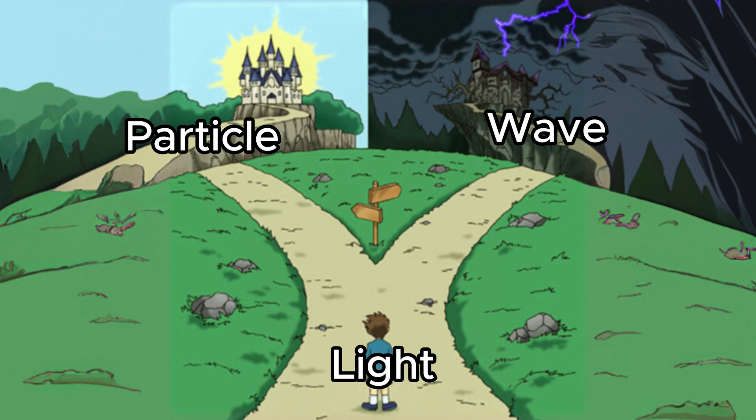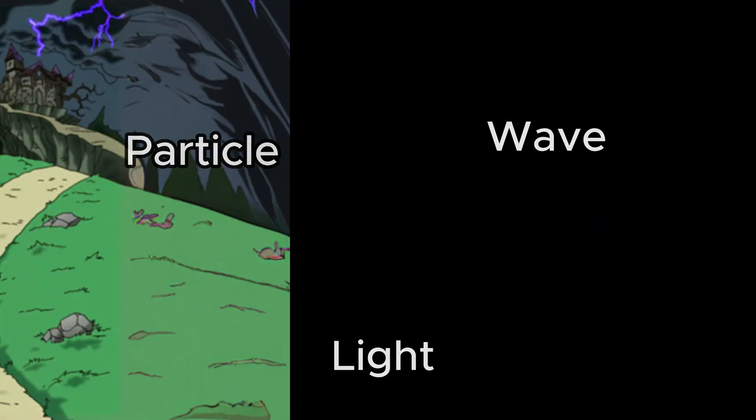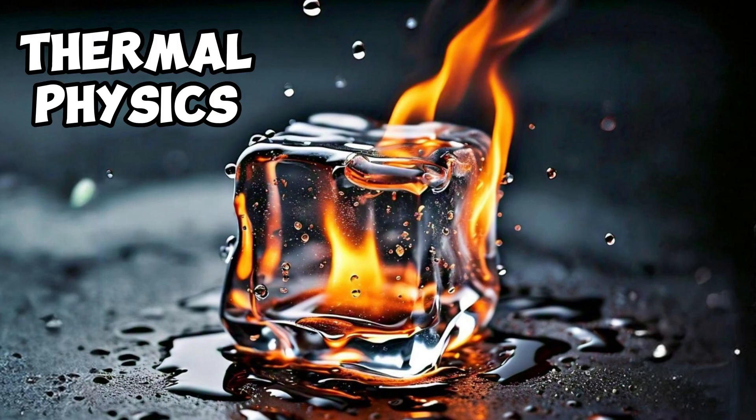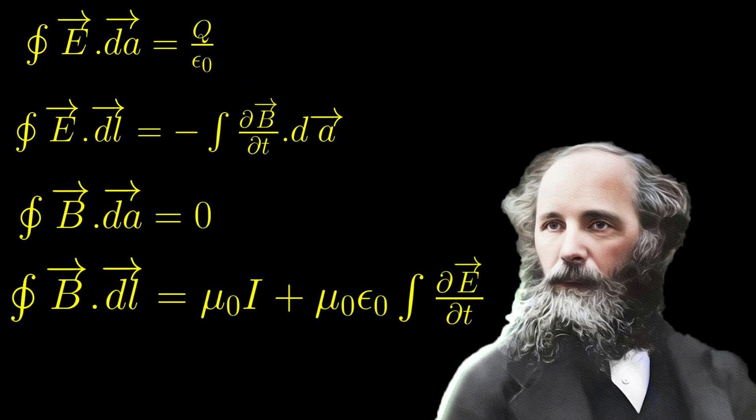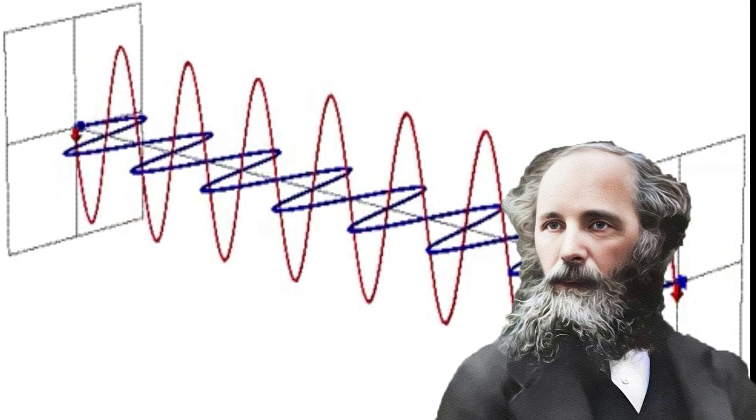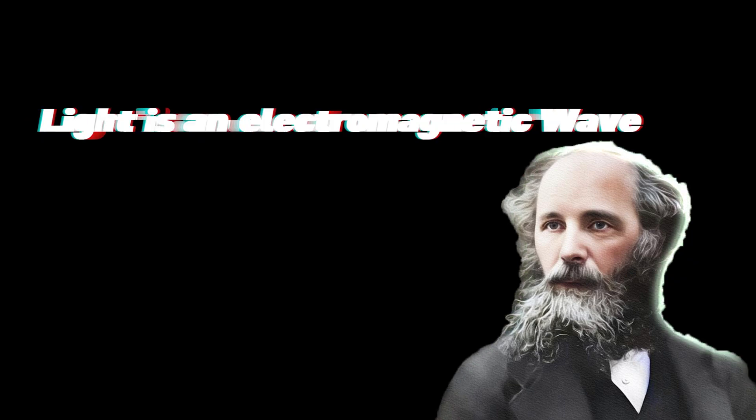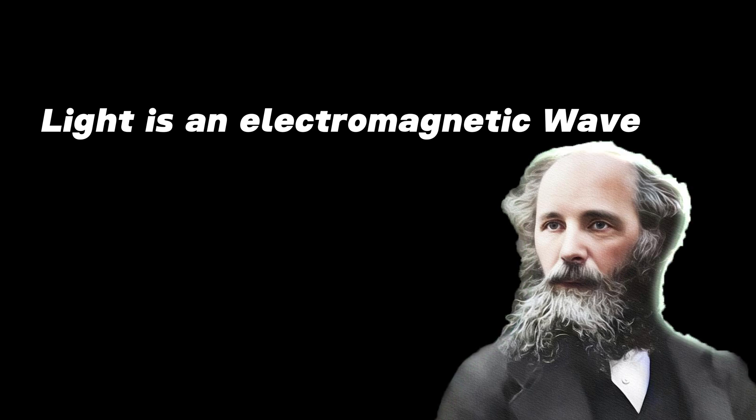These discussions led to the advancement in electromagnetism and thermal physics. In the 19th century, James Maxwell formulated the famous Maxwell's equations, which describes how electric and magnetic fields interact. This unified our understanding of electricity, magnetism, and light.